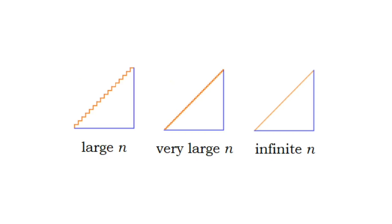Now if we keep adding steps, let's say we have a large N steps, we will, as you can see, stay pretty close to the diagonal, but the length of the orange path is still 2, not square root of 2.